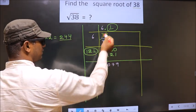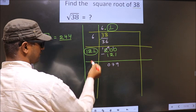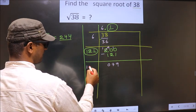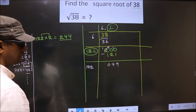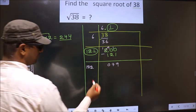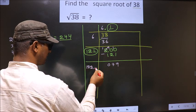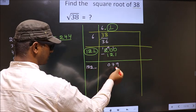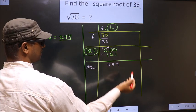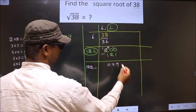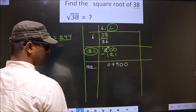Here add these two numbers and write here. 121 plus 1 is 122. We already have a decimal, so you directly take two zeros, giving 7900.